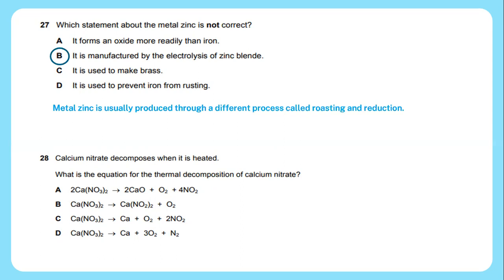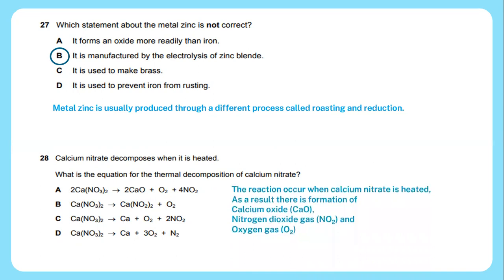Question 28: Calcium nitrate decomposes when it is heated. What is the equation for the thermal decomposition of calcium nitrate? The reaction occurs when calcium nitrate is heated. As a result, there is a formation of calcium oxide CaO, nitrogen dioxide gas NO2, and oxygen gas O2. The answer would be A.